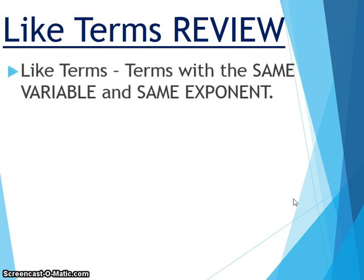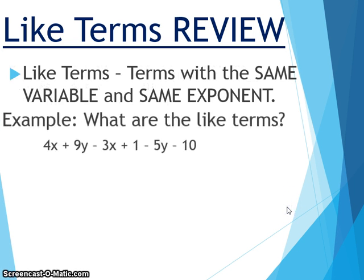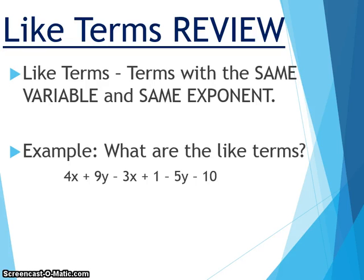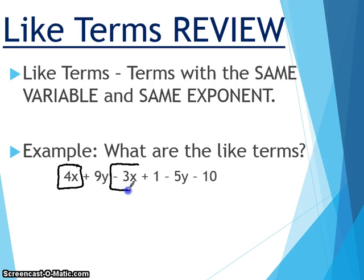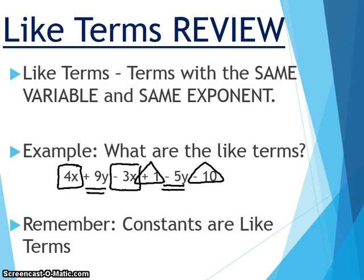To review: like terms are terms of the same variable and the same exponent. For example, in this expression, we have 4x and negative 3x as like terms, positive 9y and negative 5y as like terms, and positive 1 and negative 10 as like terms. Notice constants are like terms — don't forget that.